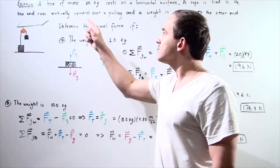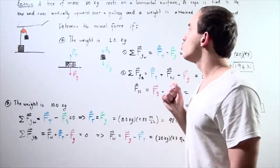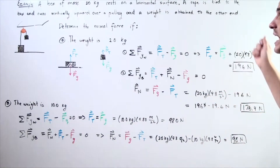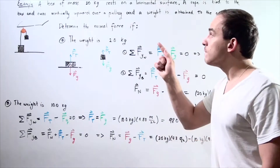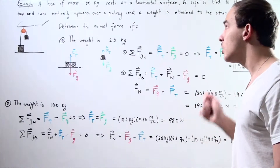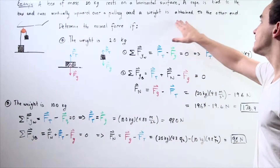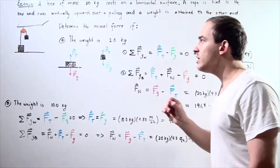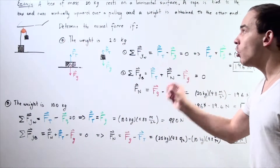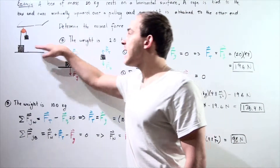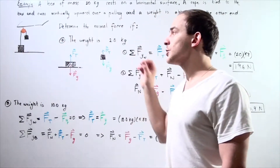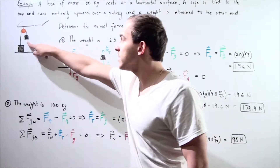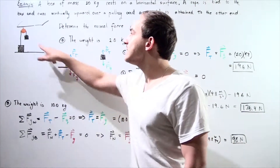Suppose a box of mass 20 kilograms rests on a horizontal surface. A rope is tied to that box, runs vertically upward over a pulley, and a weight is attached to the other end. We want to determine the normal force that the horizontal surface exerts on the box if the weight is 2 kilograms and if the weight is 10 kilograms.